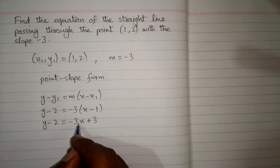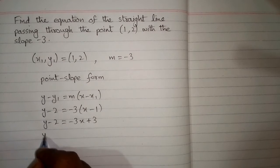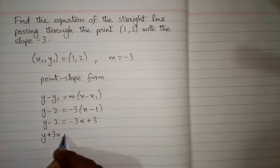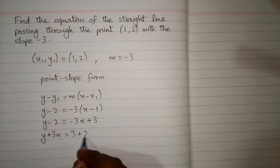Now we can take this minus 3x on this side of equation and minus 2 on this side of equation. So this minus 3x becomes plus 3x and this minus 2 becomes 2.